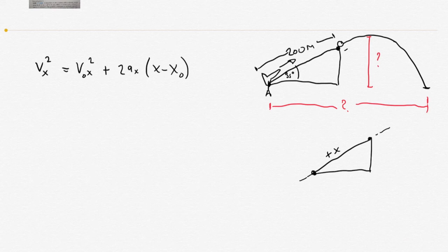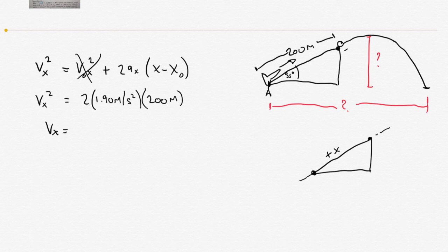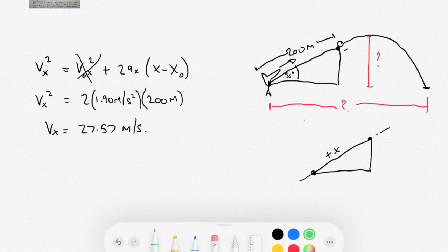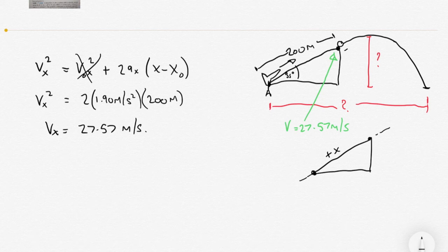Since v₀x is zero, that term goes to zero. We have v² = 2 × 1.90 m/s² × 200 m. Solving for vx — the velocity of the rocket at the end of the ramp — we get vx = 27.57 m/s. So when projectile motion begins, the rocket's speed is 27.57 meters per second.